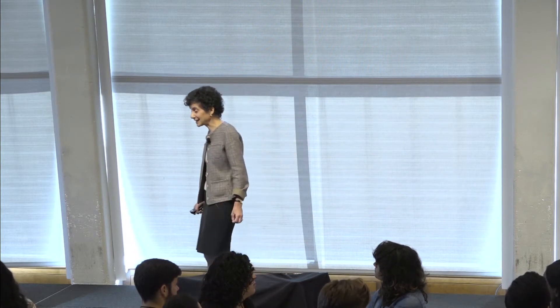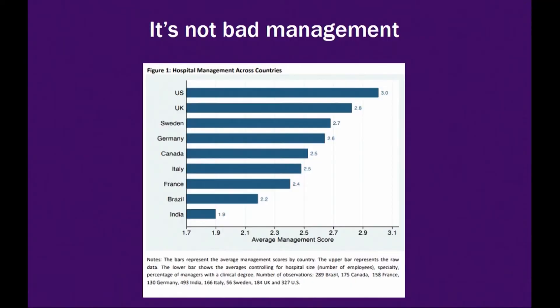It's not that we have bad management. There have been really careful studies trying to bring the world of management and policy together, looking at the quality of hospital management. A hospital is a really complicated place — you want really smart people working really effectively to manage hospitals. It turns out the best managed hospitals in the world are hospitals in the United States, by metrics that seem to predict things like heart attack mortality.